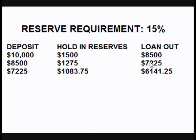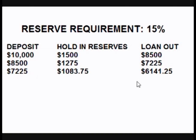This leaves them only $8,500 to loan out. Someone borrows that $8,500, spends it, and the recipient deposits $8,500 into the bank. The bank must hold $1,275, leaving only $7,225 to loan out. The borrower spends that, and the recipient deposits $7,225 in the bank.